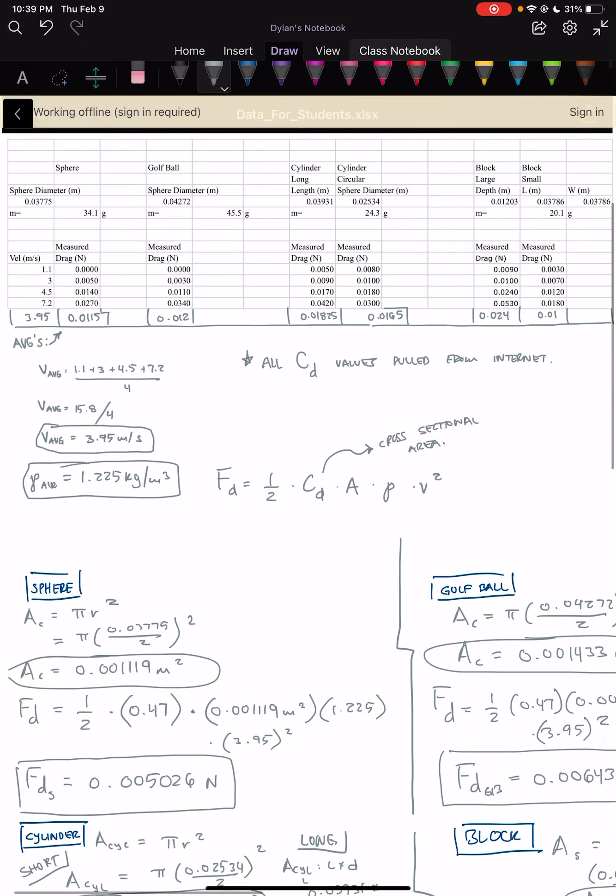Hello, this is Dylan Sieverts going over calculating steps five through seven for the wind tunnel.